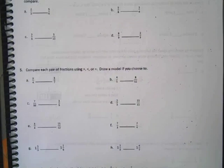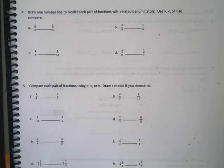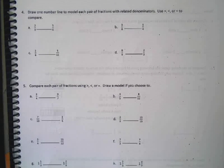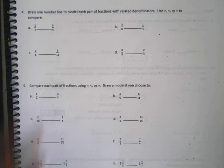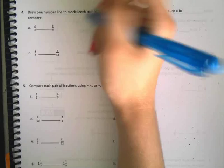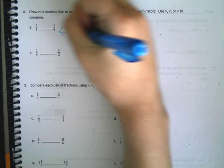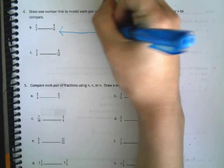That was a tricky one. It's just a lot of steps, huh? Flip it over. We'll just do a couple of each of these. Draw one number line to model each pair of fractions with related denominators. Use greater than, less than, or equal to to compare. These are related. They're not the same, but they're related. So let's go ahead and draw a number line from zero to one.